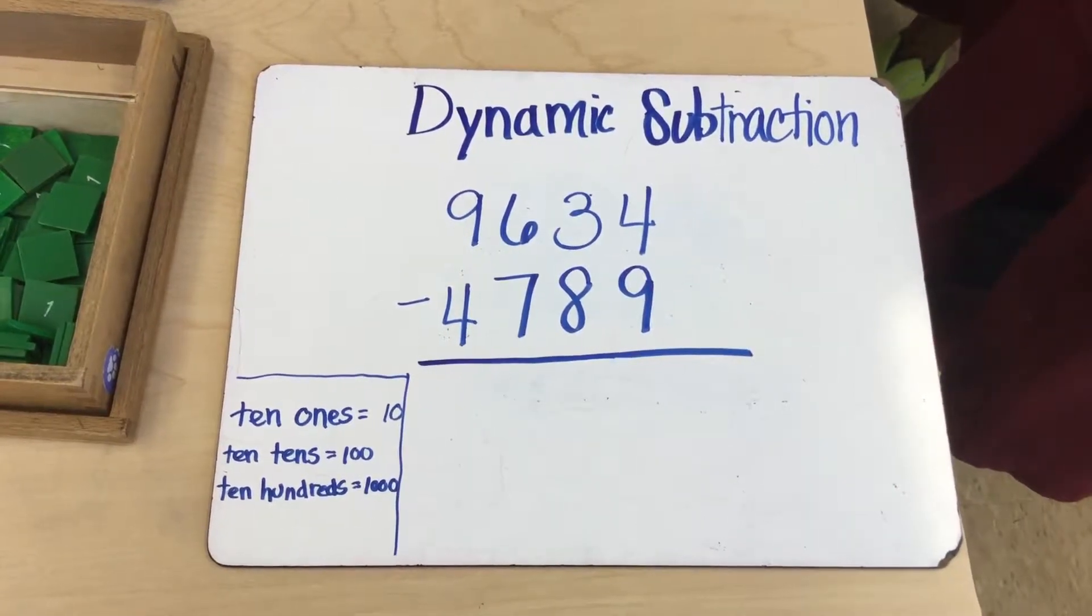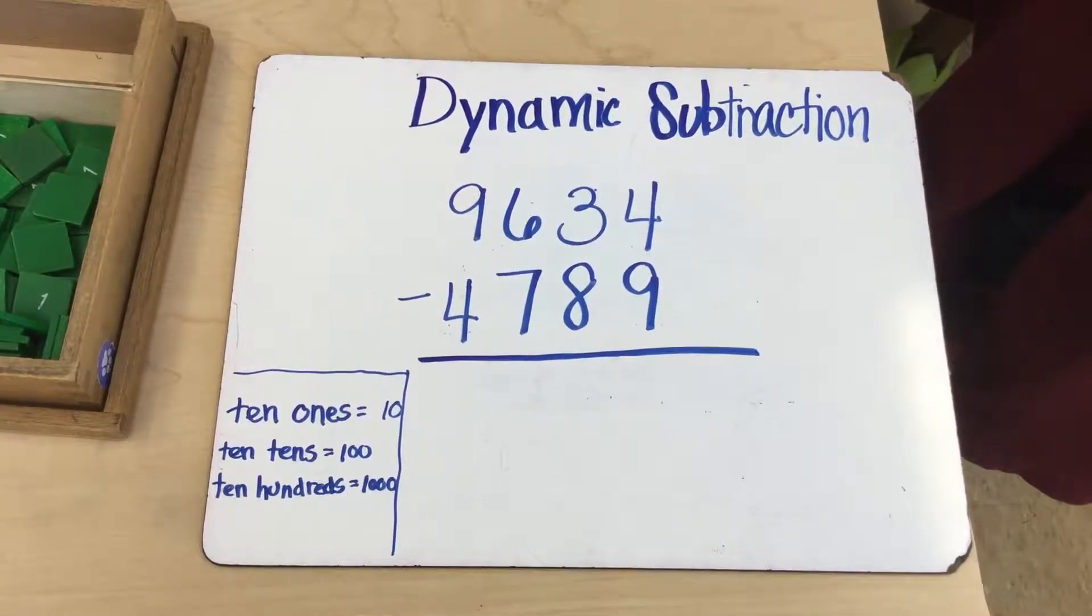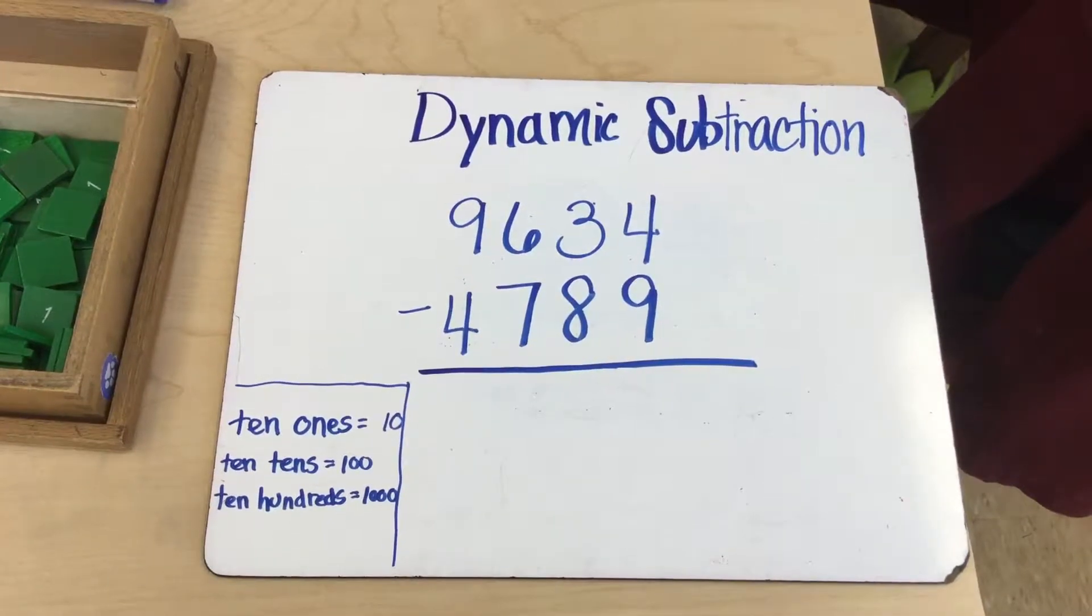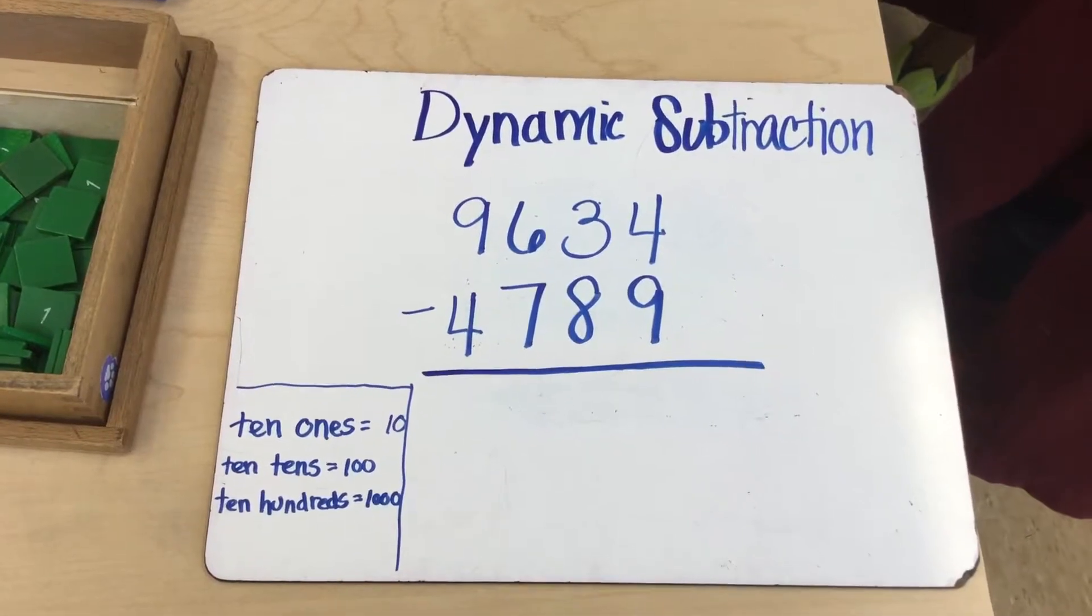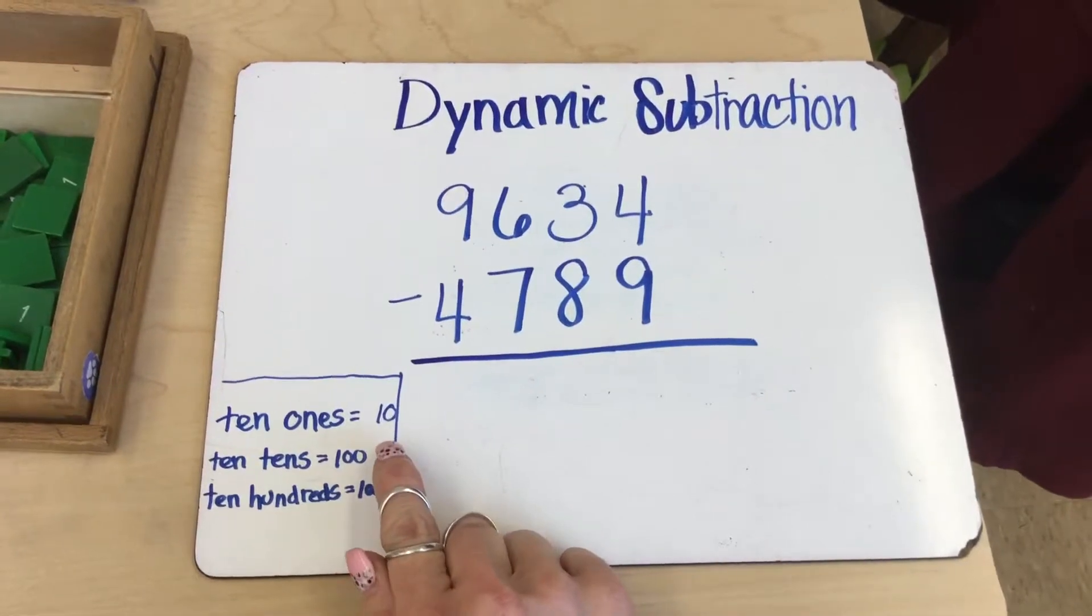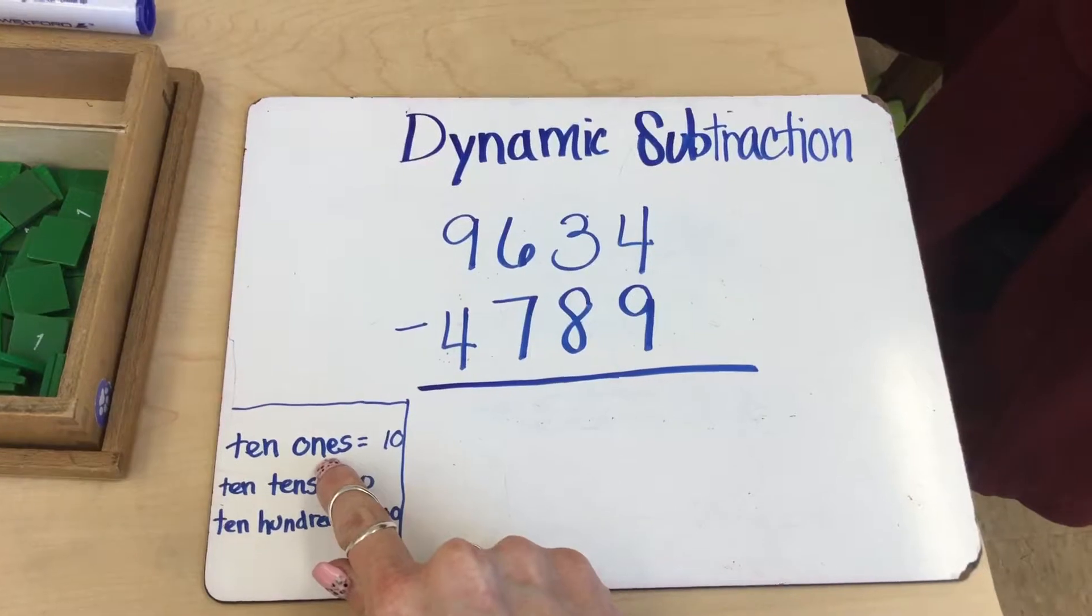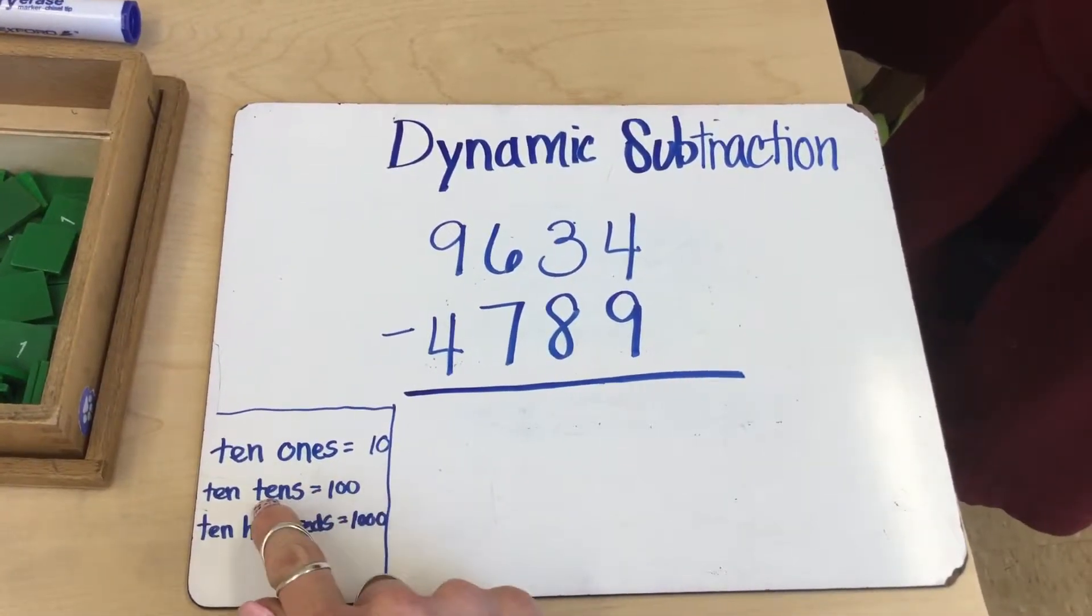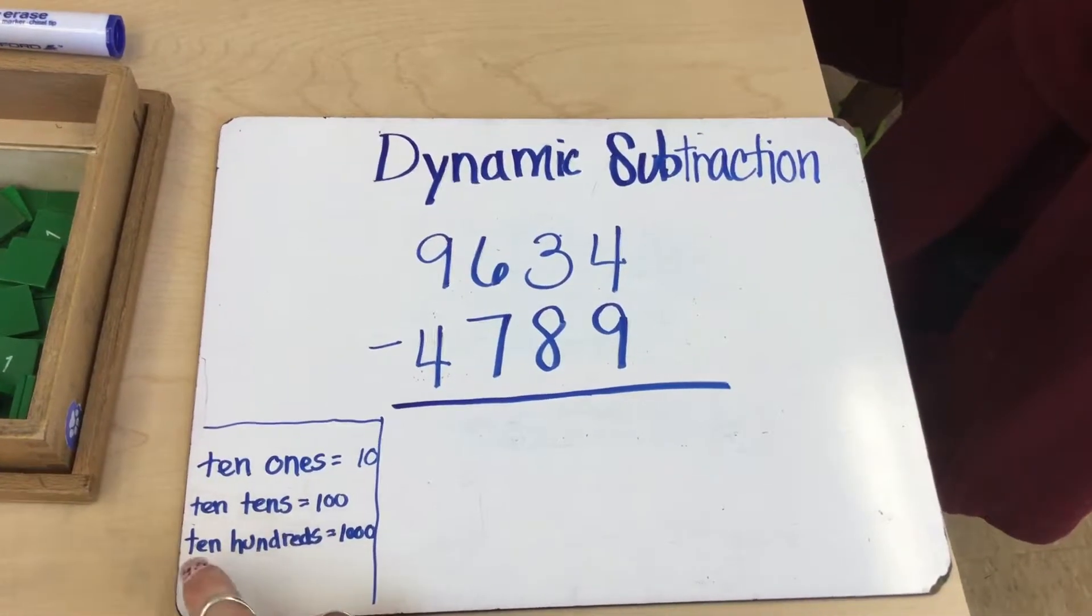One thing I like to try to tell my students is that some of what we need is hiding in the other place values. For instance, if I need more ones I can find them by turning in a ten. One ten is equal to ten ones. If I borrow from the hundreds I can break that into ten tens, and if I borrow from the thousands I can break that into ten hundreds.